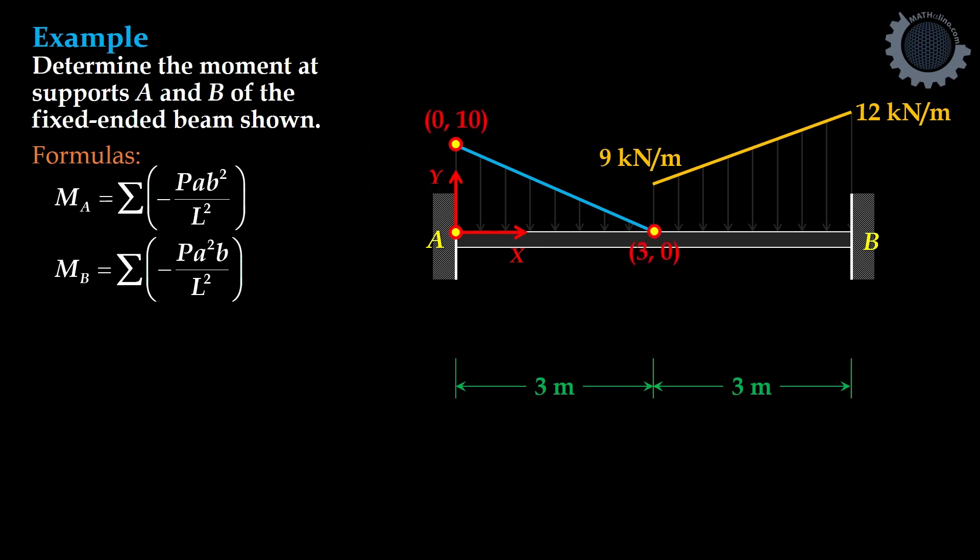This point as 3, 9. And this point is 6, 12. Now, what are the equations of these lines?